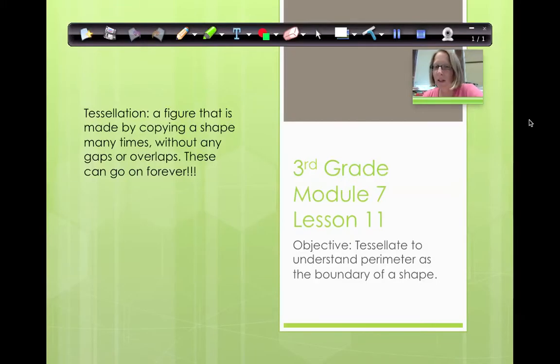Hello, today we're going to do Module 7 Lesson 11. Our objective is that we're going to tessellate to understand perimeter as the boundary of a shape.